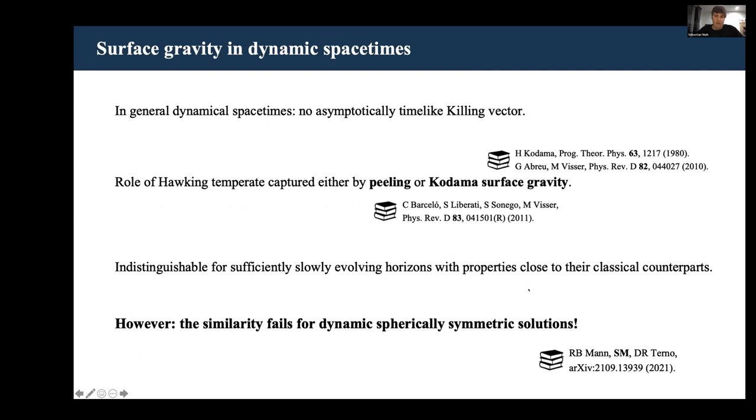Now in general dynamical spacetimes, we can't use the first definition because we no longer have an asymptotically time-like Killing vector. But there are other ways to capture the role of the Hawking temperature of a black hole. The two principal generalizations that underpin different variations of Hawking radiation in the case of an evolving black hole spacetime are the peeling surface gravity and the Kodama surface gravity.